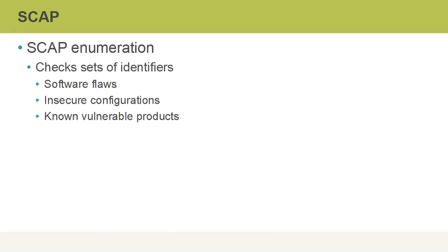SCAP enumeration checks a specific set of identifiers that are a standard. It looks for software flaws, insecure configurations, and also known vulnerable products that might be installed on a host.